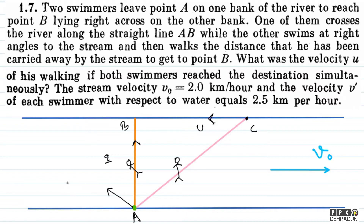जो उसकी खुद की velocity है with respect to water, V dash वो कुछ ऐसे direction में होगी, and let's say वो angle theta बना रहा है with AB. साथ ही उसको stream की velocity V naught भी मिली। तो basically पहले swimmer के बारे में बात करें, तो वो अपनी कोशिश कर रहा है oblique direction में travel करने की, लेकिन river की velocity की वजह से उसकी net velocity along AB आ रही है, जिसके कारण वो A से चला और B पर पहुँच गया।